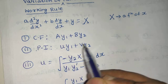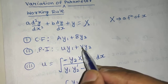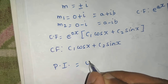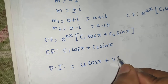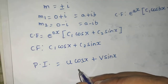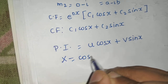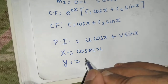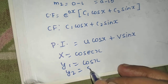As I told you, comparing the CF with this form, in the particular integral y1 and y2 will be the same, but in place of C1 and C2 you will have u and v. So the particular integral will be of the type u·cos x + v·sin x. Here X is obviously cosec x from the RHS. Your y1 is cos x (whatever is with u) and y2 is sin x.